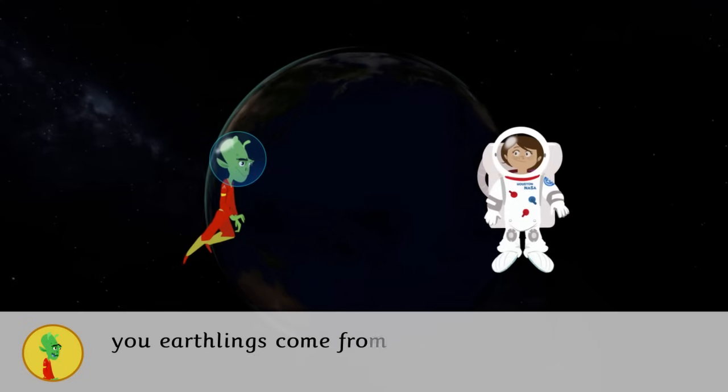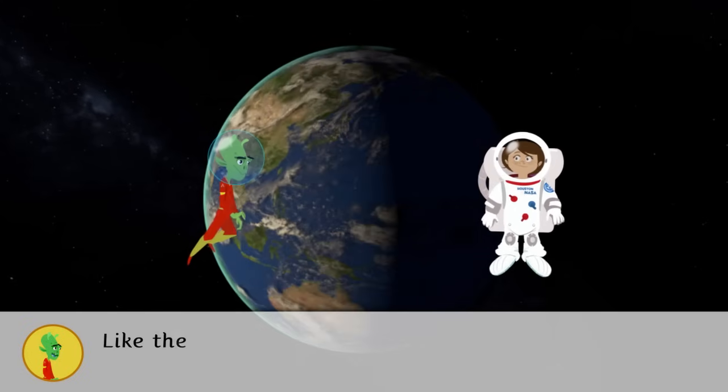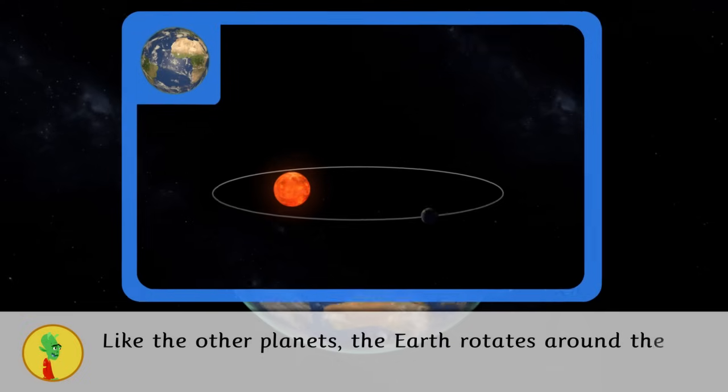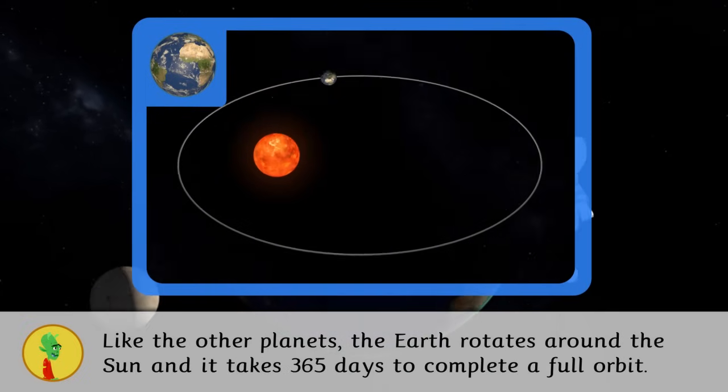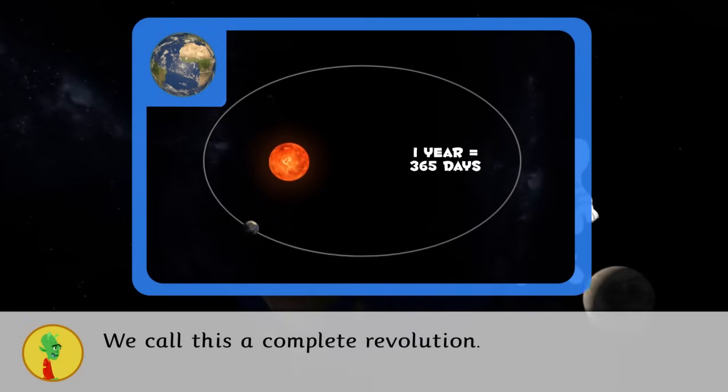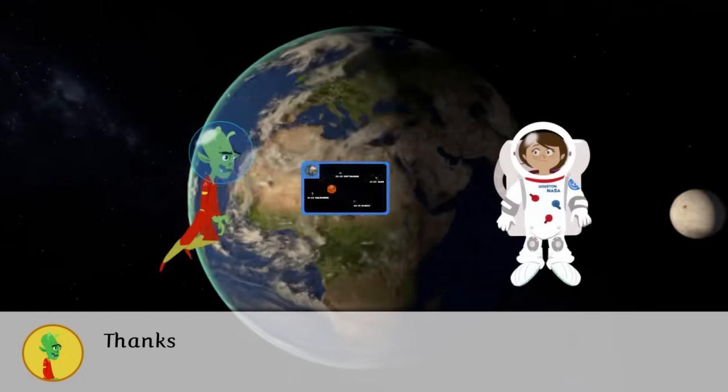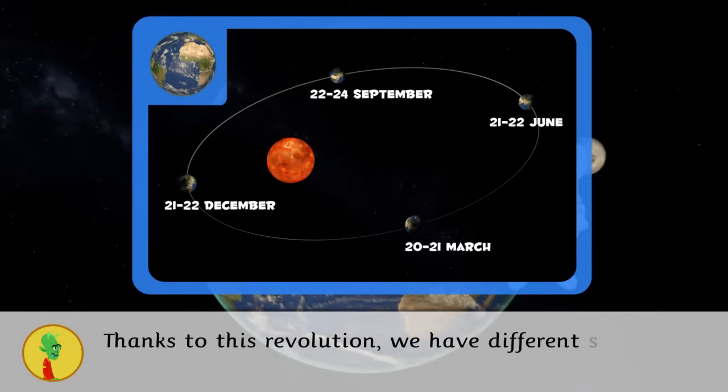Like the other planets, the Earth rotates around the Sun and it takes 365 days to complete a full orbit. We call this a complete revolution. Thanks to this revolution, we have different seasons throughout the year and days and nights have different lengths.